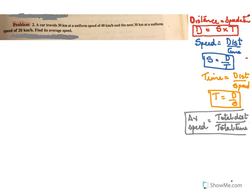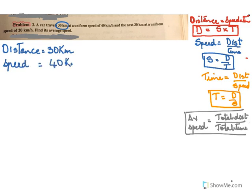Now we read the sum. A car travels 30 kilometers at a uniform speed of 40 kilometers per hour, and the next 30 kilometers at a uniform speed of 20 kilometers per hour. Find its average speed. So this car makes the first distance of 30 kilometers, travelling at a speed of 40 kilometers per hour.